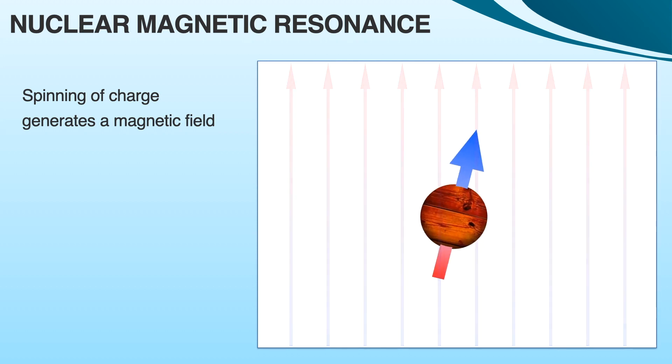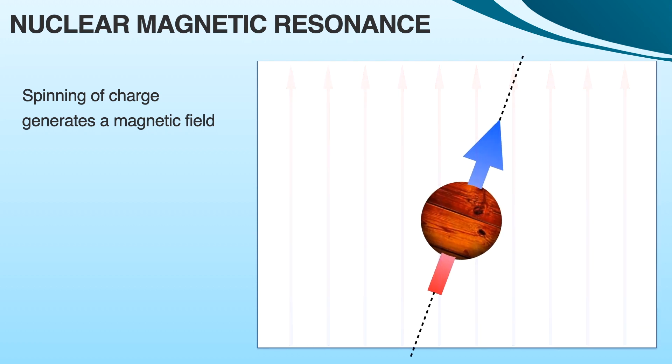In both cases, as the axis of rotation changes its direction, the spinning nuclei start revolving around the axis in a circular path. This type of movement is known as precession.